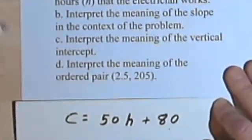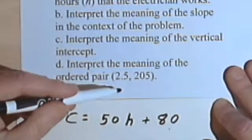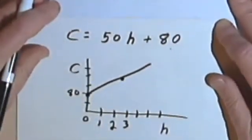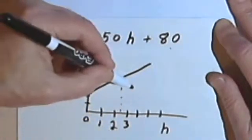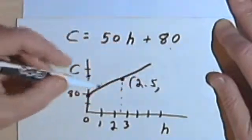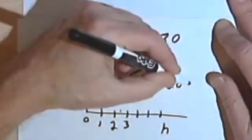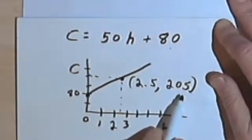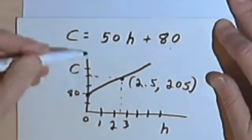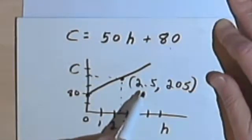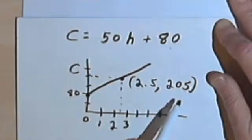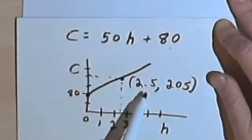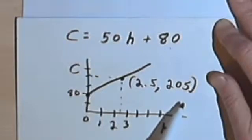Interpret the meaning of the ordered pair (2.5, 205). On the graph, 2.5 would be between 2 and 3 on the h-axis, and 205 is a money value. The independent variable comes first: 2.5 is time in hours, and 205 is the charge. So this ordered pair tells you that when he has worked 2.5 hours, the charge is going to be $205.